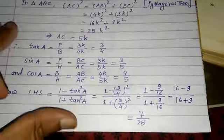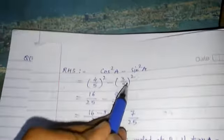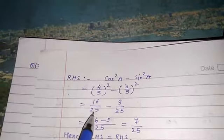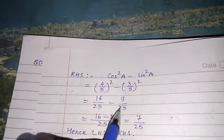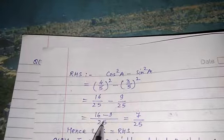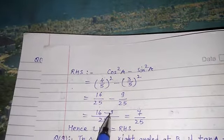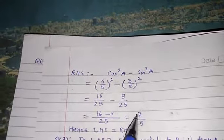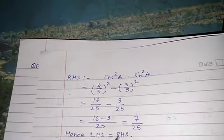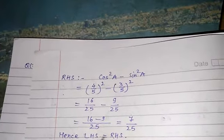LHS value is 7/25. Now for RHS: cos²A - sin²A = (4/5)² - (3/5)² = 16/25 - 9/25 = 7/25. So LHS = 7/25 and RHS = 7/25, hence LHS equal to RHS — proved.